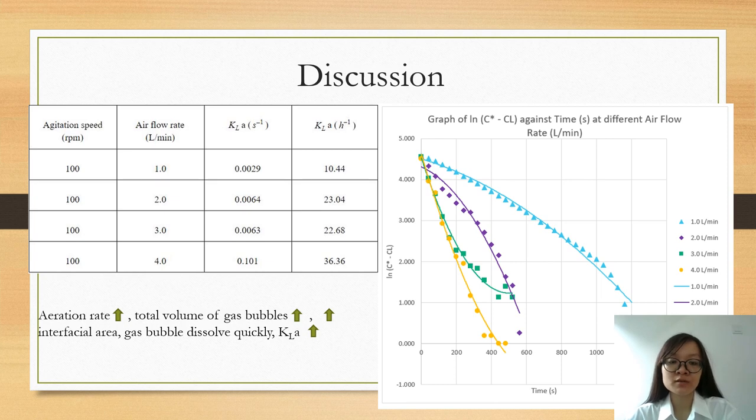The volumetric mass transfer coefficient KLA indicates the rate of oxygen used for fermentation. Determination of KLA is important to maintain the adequate transfer of oxygen in a bioreactor. KLA is used as a measure of the aeration capacity of a bioreactor.